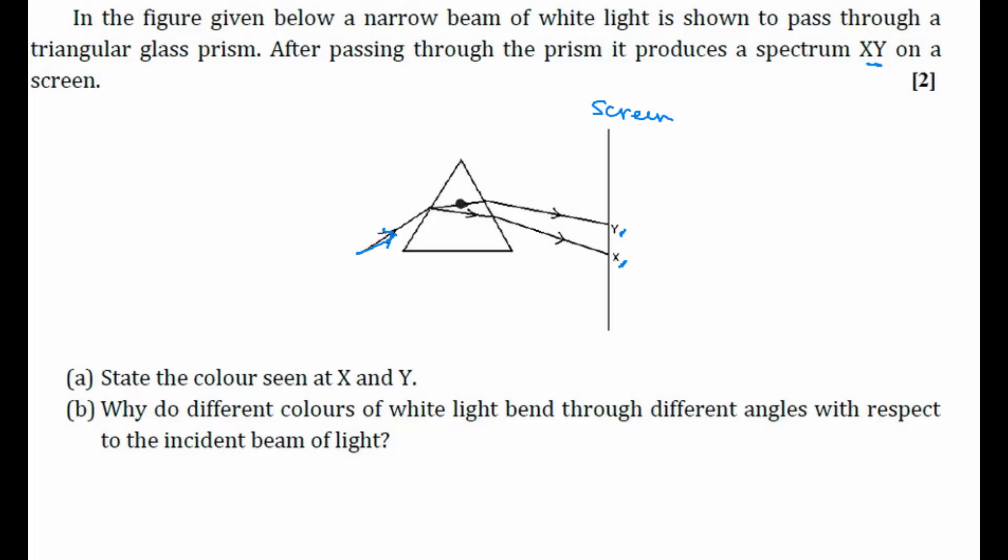Dispersion is nothing but splitting of white light into seven different colors which we know already which are violet, indigo, blue, yellow, orange, red.